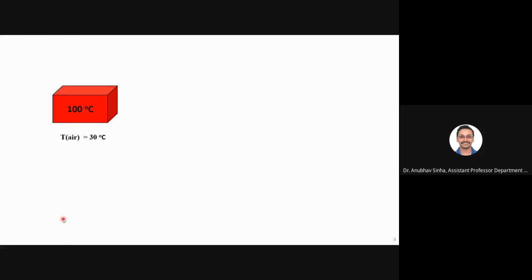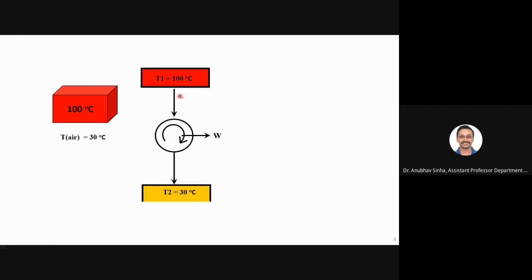Let us begin with a simple example. Say you have a block of metal at 100 degrees Celsius and your ambient air is at 30 degrees Celsius. Can you extract any work from this metal block? If you want to use this heat to do work, you need a heat engine. So this is my high temperature reservoir at 100°C and the low temperature is the ambient atmosphere at 30°C, and using a heat engine I am extracting some work.